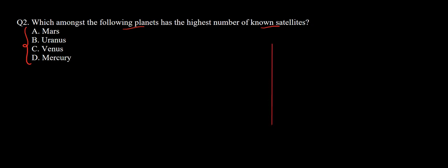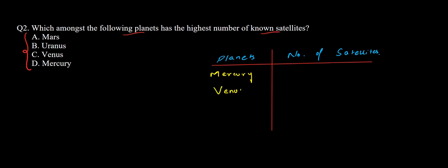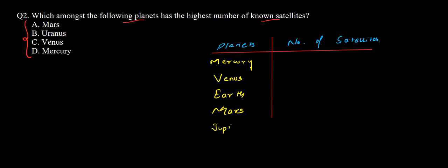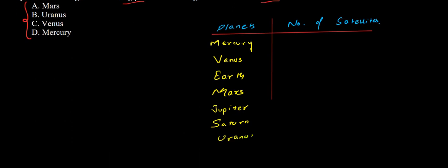Since Pluto is no more part of the solar system, we will not consider it, so we are left with only eight planets and their satellites. Here we will write the planets and here we will write the number of satellites. Our planets in order are Mercury, Venus, Earth, Mars, Jupiter, Saturn, Uranus, and Neptune — the eighth planet. Now let's write down their number of satellites.